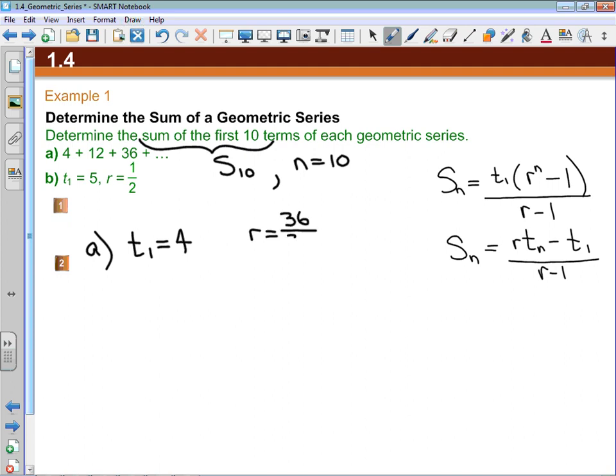I can also determine that the common ratio, given by Term 3 divided by Term 2, or Term 2 divided by Term 1, I get that the common ratio is 3 in either of those cases.